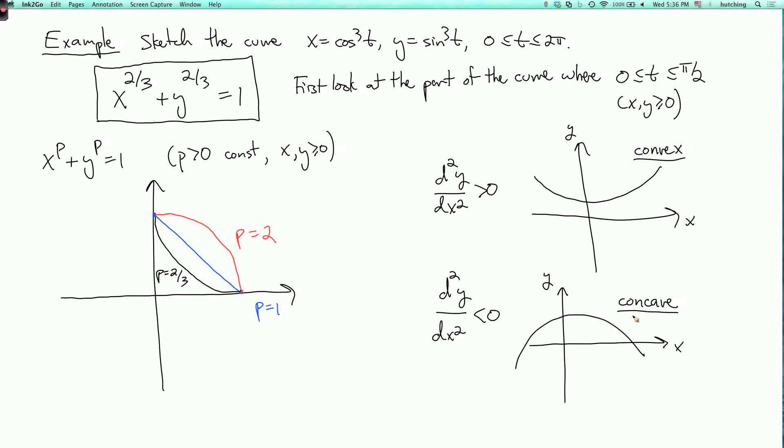Okay. So to check that this graph is convex, then what you have to do is take the equation x to the 2/3 plus y to the 2/3 equals 1, solve for y as a function of x, calculate the second derivative, and check that that's positive. So you can do this, but I'll leave that as an exercise for you if you're really interested. If not, then just looking at p equals 1 and p equals 2 makes it very plausible that it's going to come out like this. Okay. So this is just the part of the curve where t goes from 0 to π/2 and it has an arrow on it like this.